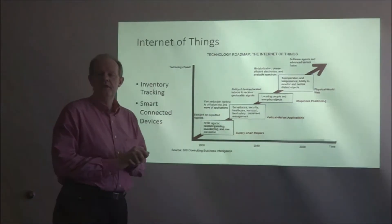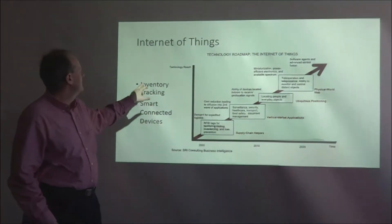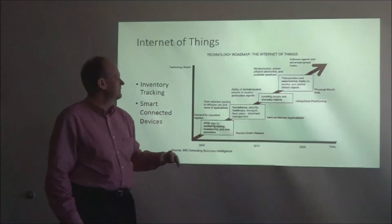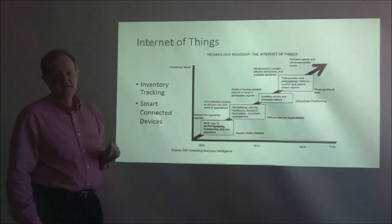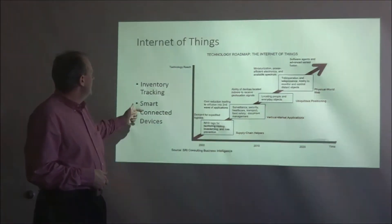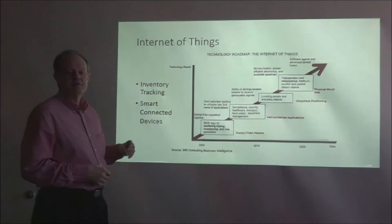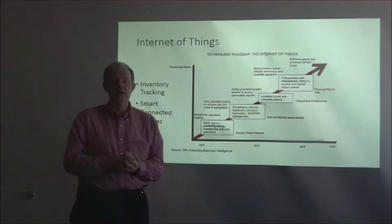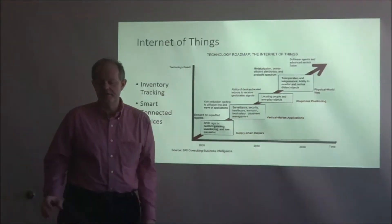We're going to talk about the Internet of Things. There are two parts to the Internet of Things. There's an old definition of inventory tracking for RFID — you can see it in this graph, it's an old graph nicely presenting the progress of Internet of Things. And now we're talking more about smart connected devices, although inventory tracking and knowing where things are is still a very important characteristic.